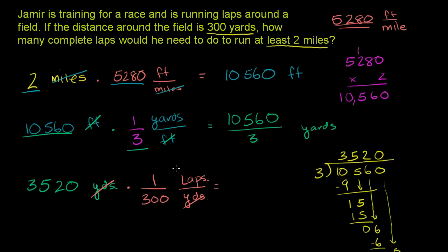Now, how many laps are there per yard or yards per lap? Well, they say the distance around the field is 300 yards. So we have 300 yards for every one lap. So now if we multiply this right here, the yards will cancel out. And we will get 3,520 times 1 over 300. When you multiply it times 1, it just becomes 3,520 divided by 300. And in terms of the units, the yards canceled out. We're just left with the laps. So this is how many laps he needs to run.